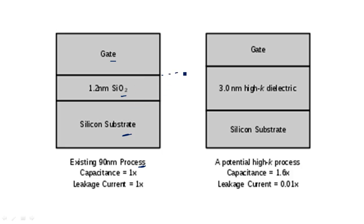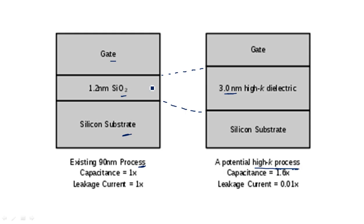Now this is much enlarged with a different type of dielectric material — a high-k dielectric constant material — with 3 nanometers for the same technology, which is known as a potential high-k process, established again between the gate and silicon substrate. The thickness of the material is much more increased, almost more than double: it is 1.2 nanometers with SiO2 and now 3 nanometers with high-k.